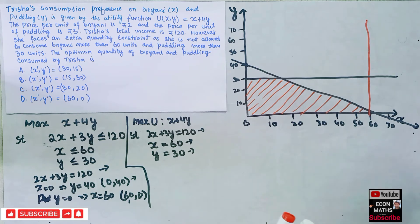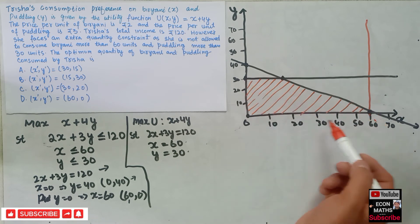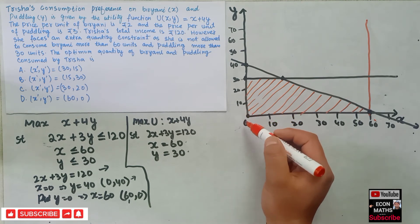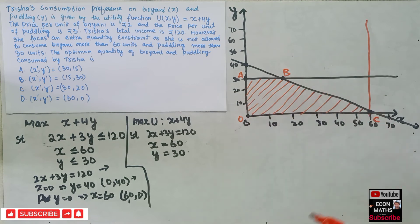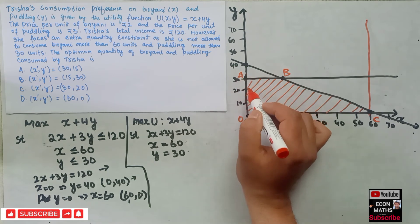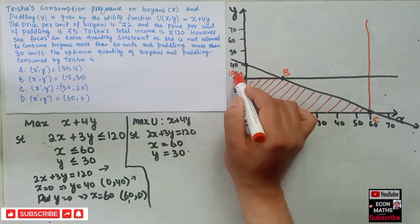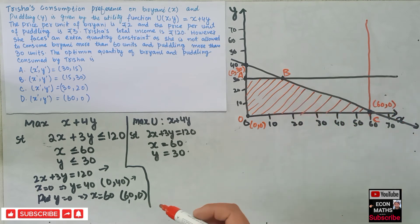We will use the corner point method to find the optimal solution. The optimal solution will lie on one of the corner points of the feasible region. Let's label the corner points as O, A, B, and C. The coordinates are: O = (0, 0), A = (0, 30), and C = (60, 0). We still need to find the coordinates of point B.